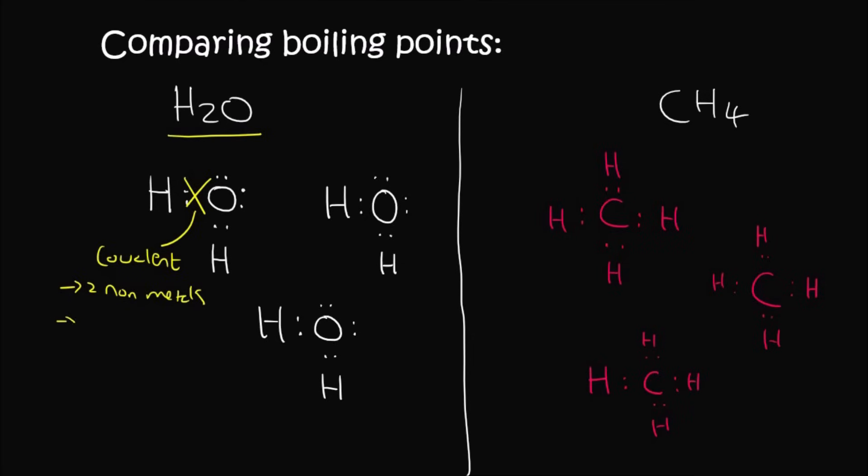Second of all, we've looked at the electronegativity difference in previous lessons, and we've seen that it's less than 2.1. So this is covalent, and so when you boil this molecule, you're going to separate the water molecules from each other.